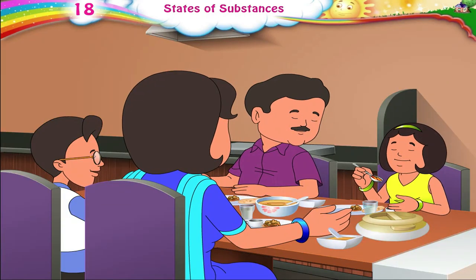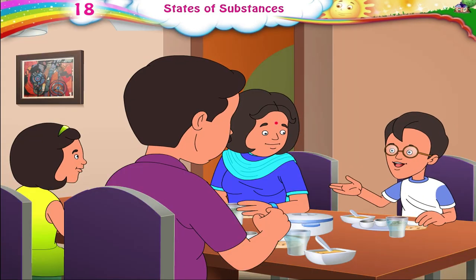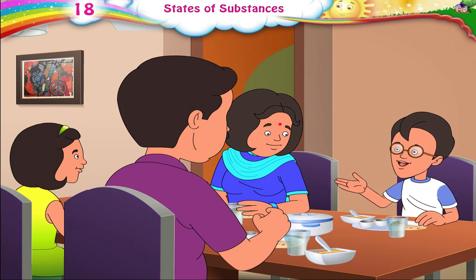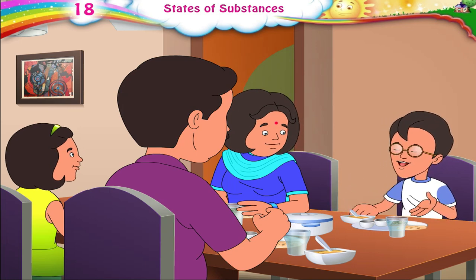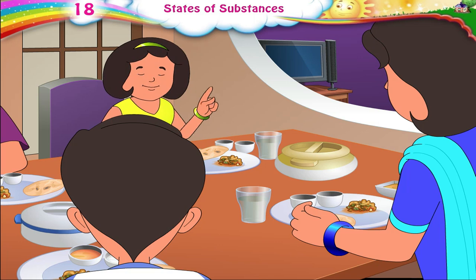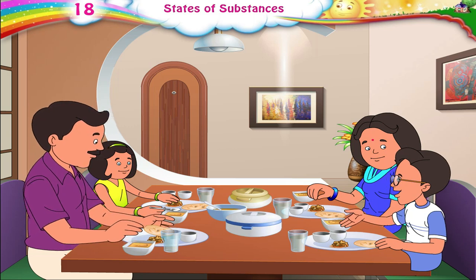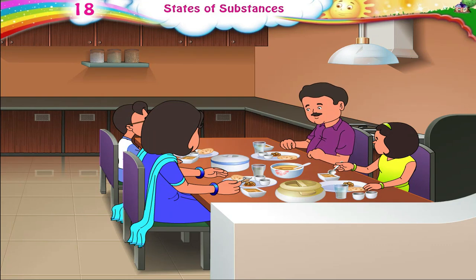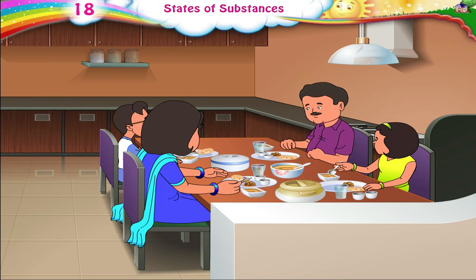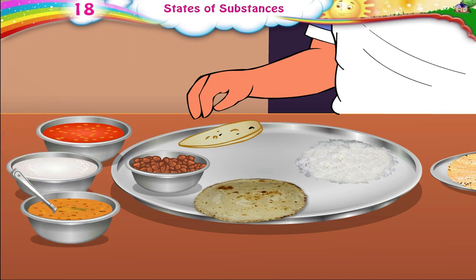Thanks, Ma. The food looks really delicious. But tell me, Papa, why is it that Ma always serves us this delicious soup in such a small bowl? Isn't the buttermilk also in one, and the dal as well? But why do they all have to be in small bowls? The reason that Ma puts it in a small bowl is to prevent it from spreading through your plate and making it messy.